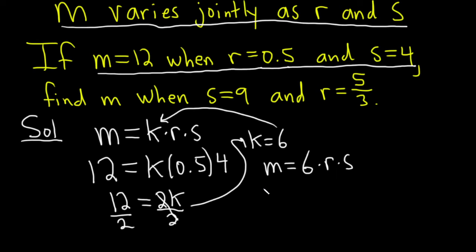Okay, and the last step is to simply read the last sentence. Find m when s equals 9 and r equals 5 thirds. So now you plug everything into your new formula. m is equal to 6 times 5 over 3 times 9.